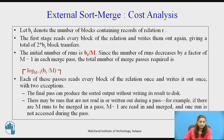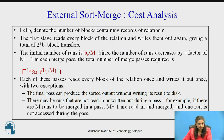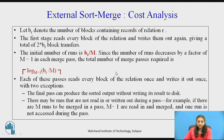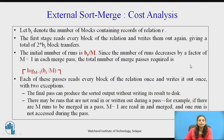Let us look at the cost analysis. B_R denotes the number of blocks in relation R. In the first stage, all blocks are read, sorted, and written back to disk, requiring 2 × B_R block transfers. In the merge phase, we read B_R / M blocks at a time. The total number of passes required is ⌈log_{M-1}(B_R / M)⌉, because each pass reduces the number of runs by a factor of M minus 1.